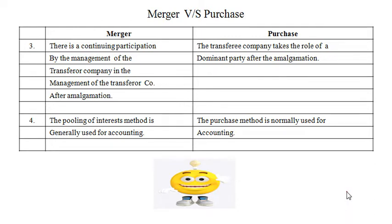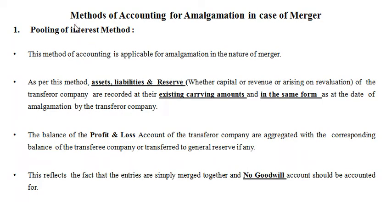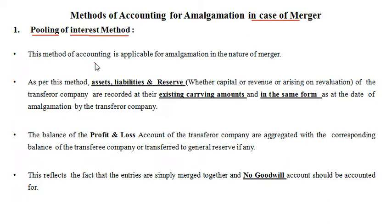Now we will see the methods of accounting for amalgamation. In case of merger, the first method is the pooling of interest method. We use the pooling of interest method for accounting the amalgamation transactions in case of merger — this method is applicable for amalgamation in the nature of merger.